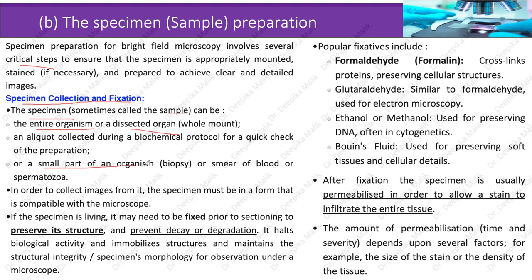Fixation holds biological activity, immobilizes structures, and maintains structural integrity and specimen morphology for observation. Popular fixatives include: formaldehyde or formalin, which cross-links proteins preserving cellular structures; glutaraldehyde, similar to formaldehyde and used for electron microscopy; ethanol or methanol, used for preserving DNA, often in cytogenetics; and Bouin's fluid, used for preserving soft tissues and cellular details.